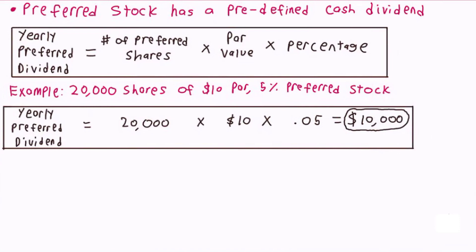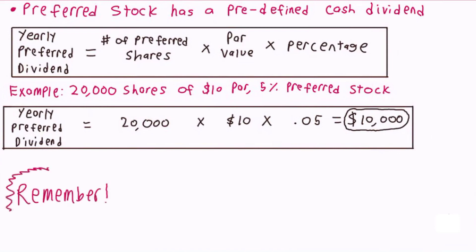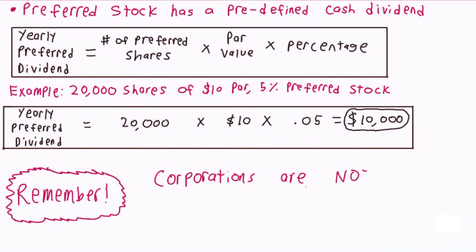Important note: remember that corporations are not required to pay dividends. Even though there is a yearly dividend that can be calculated for preferred shareholders, there is no guarantee that the company will end up paying that amount. To help you understand better, let's look at a quick example.